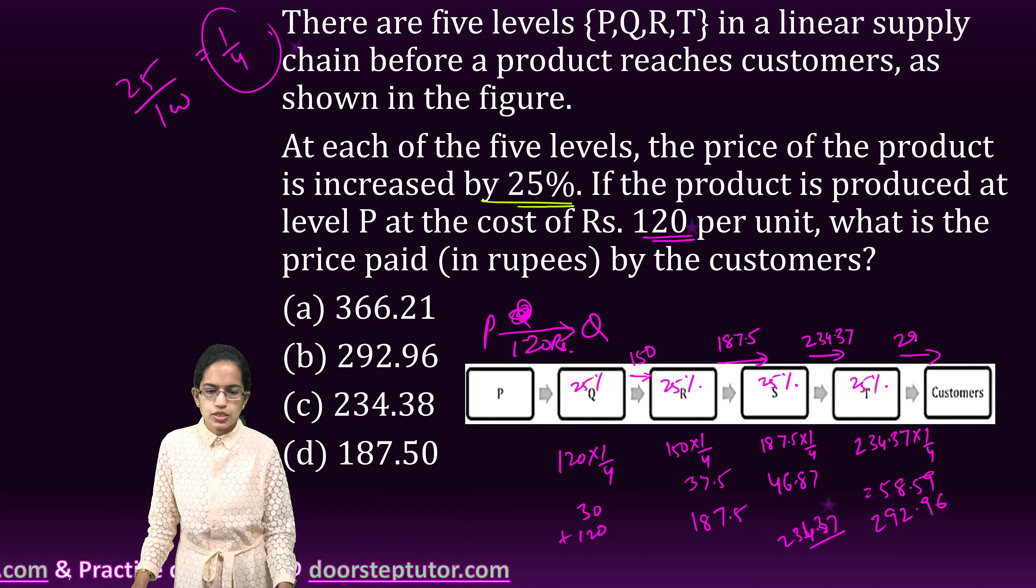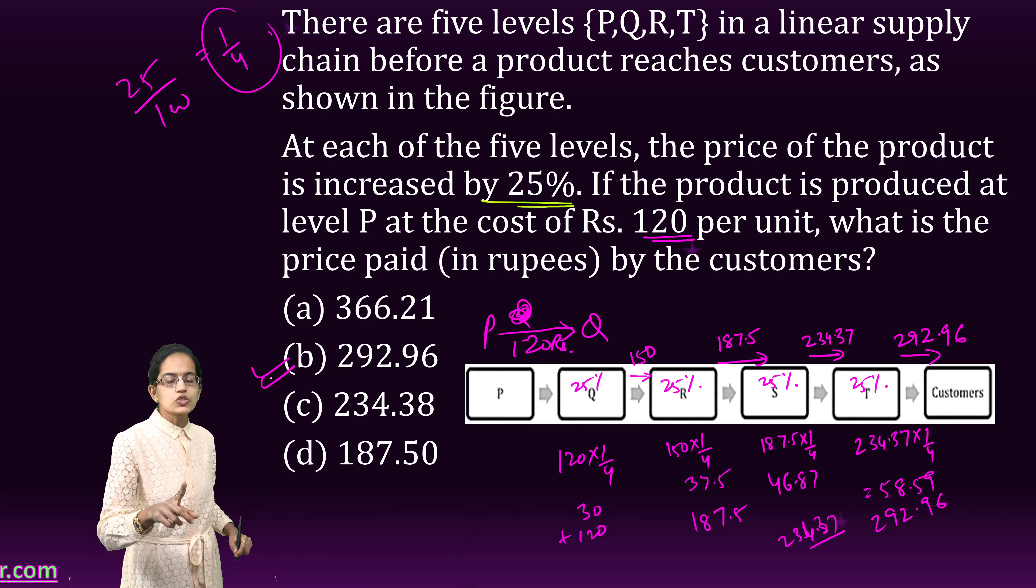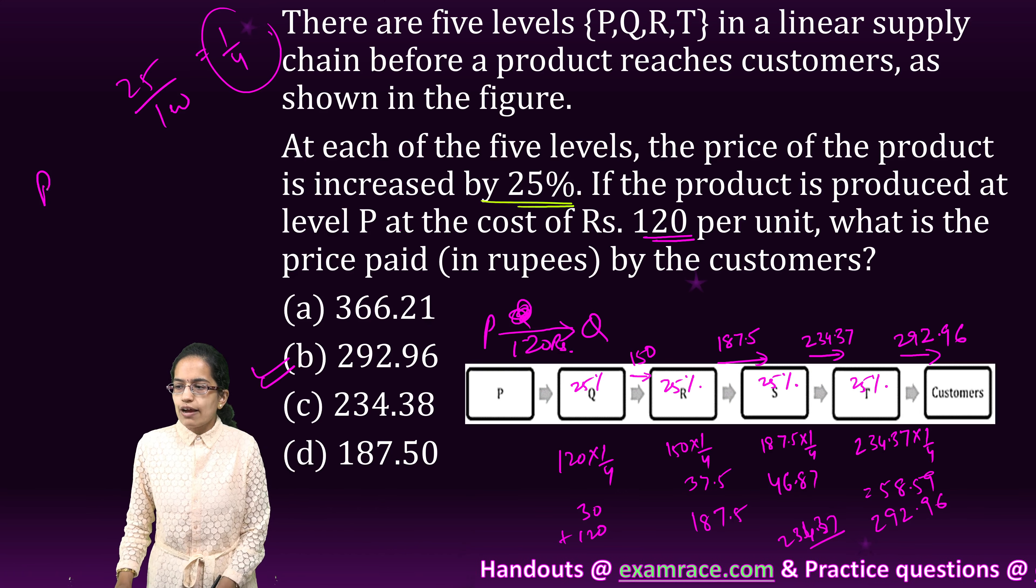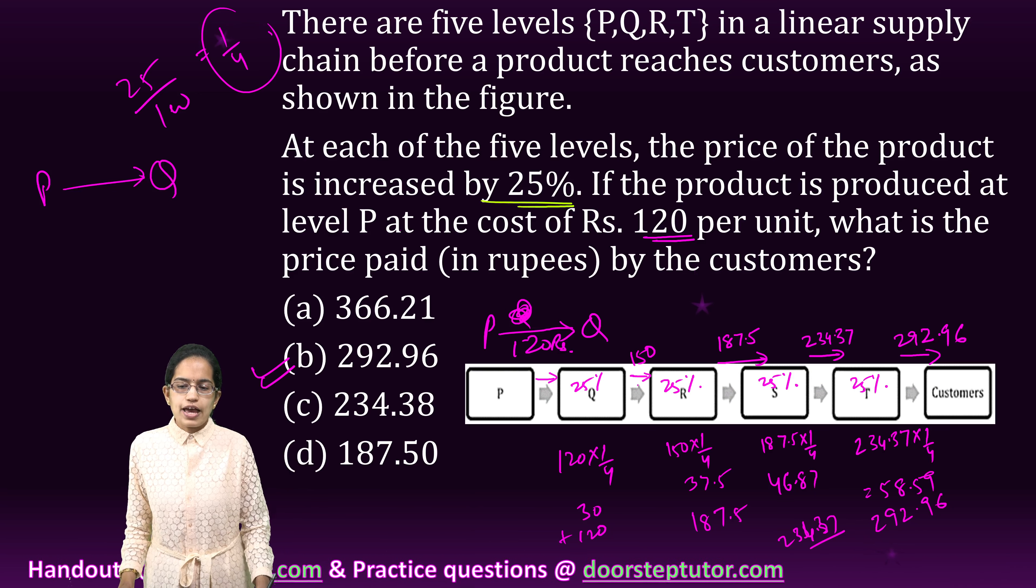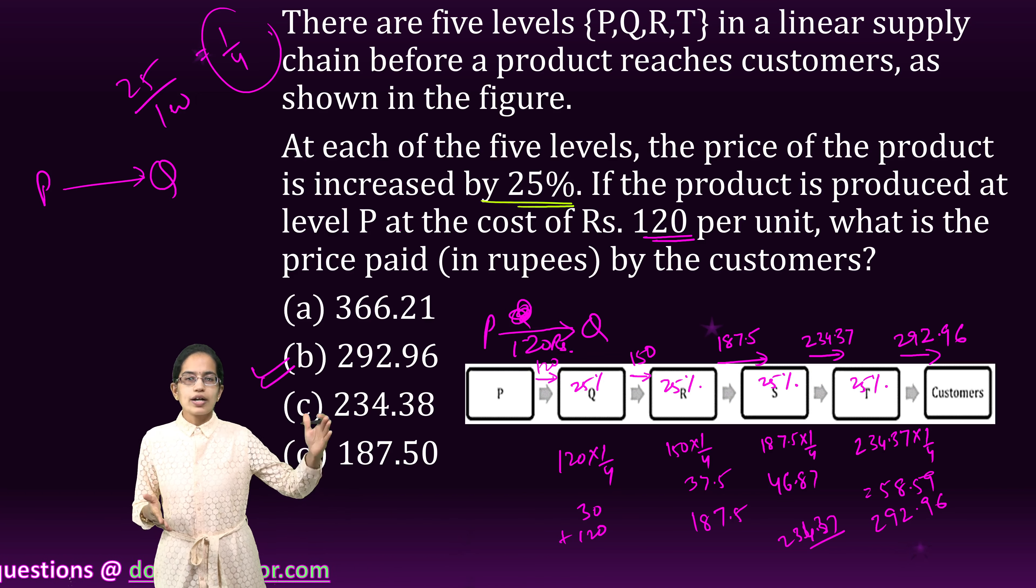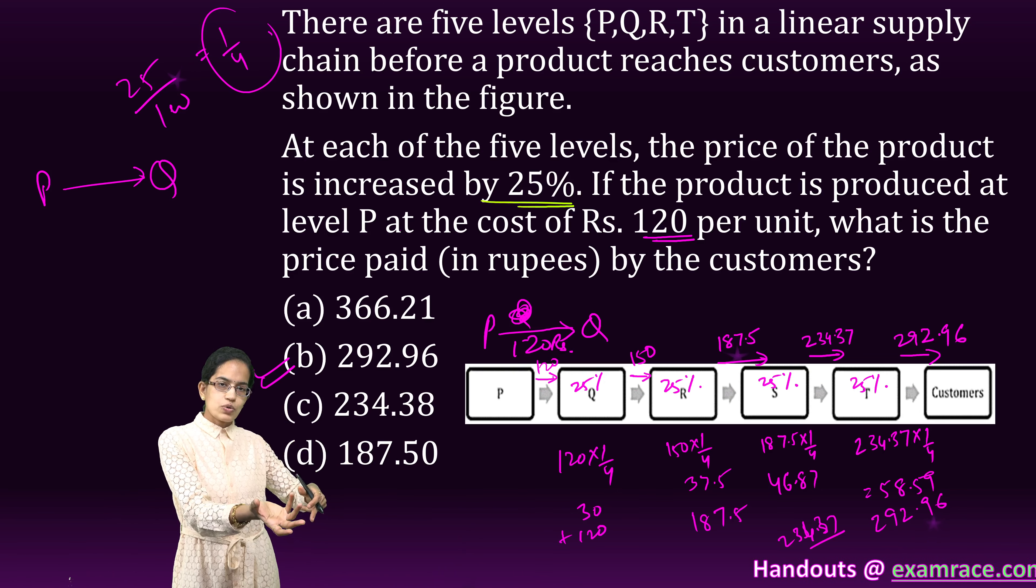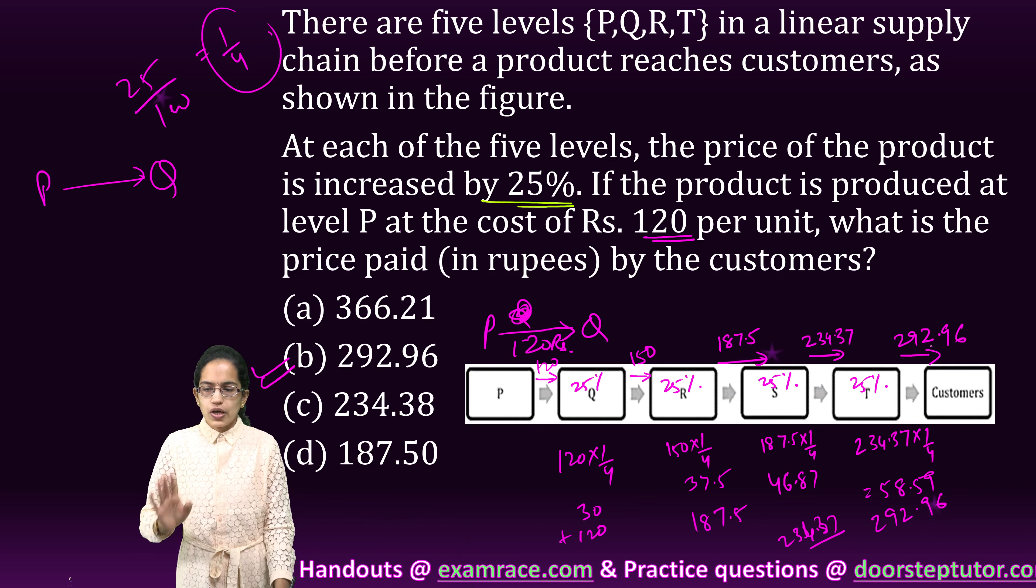So I add this 58.59 with 234.37 giving me 292.96. So this value when it goes to customer is 292.96. So B becomes my right option. Now lot of students got confused here as to till what level we would move. So what you need to understand is you have to mark the values on the arrow. So count the number of arrows and mark the values accordingly. The first value is 120 and do a compounding of it. So 25% of 120 and then whatever value you get, 25% of it added to again the base value and then move forward. And finally, the last arrow would be your answer.